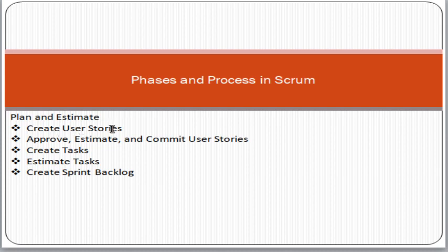The next phase is Plan and Estimation. In this phase we create User Stories. A User Story is a functional requirement of a customer — for example, 'the customer can make a payment through credit card in the e-commerce solution' is a User Story. Another example: 'the customer can browse the product catalog in the e-commerce solution.' Then we approve, estimate, and commit the User Stories.